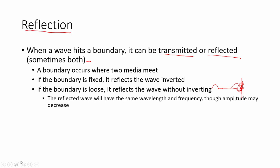Reflection is not going to affect the wavelength or the frequency, but it might affect the amplitude. If some energy is lost at the boundary, the wave that returns will come back with less amplitude. You've heard this if you've ever listened to an echo — it comes back sounding like you, but quieter, because some energy is lost.